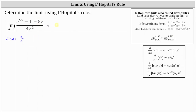So let's work on determining the derivatives. The derivative of the numerator is the derivative of e to the power of 5x, which equals e to the power of 5x times the derivative of 5x, which is 5. Then we subtract the derivative of 1, which is 0, and subtract the derivative of 5x, which is 5. We divide by the derivative of 4x squared, which is 8x.